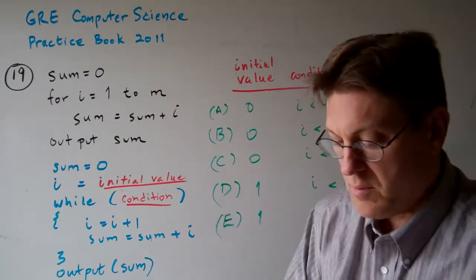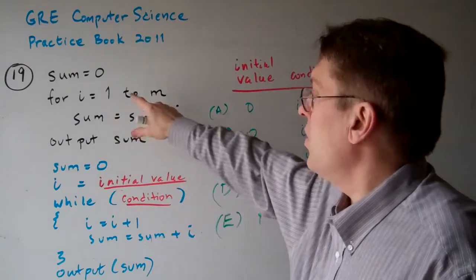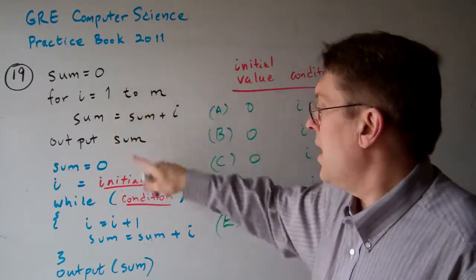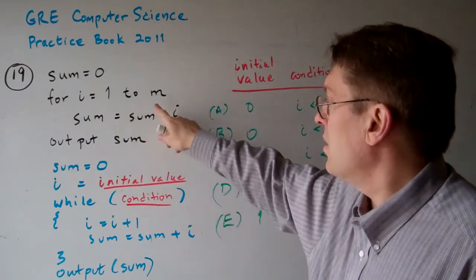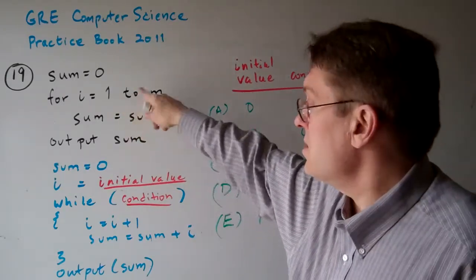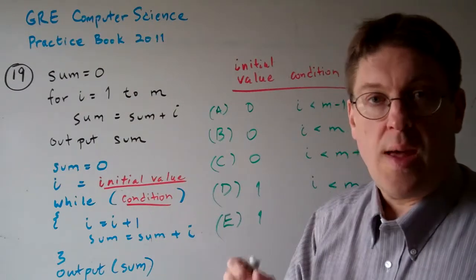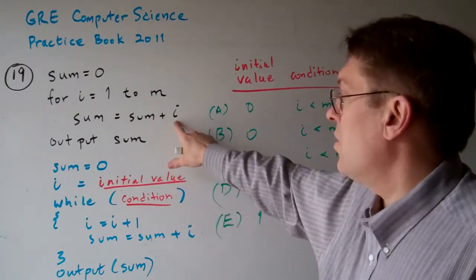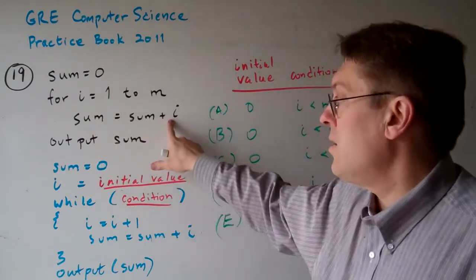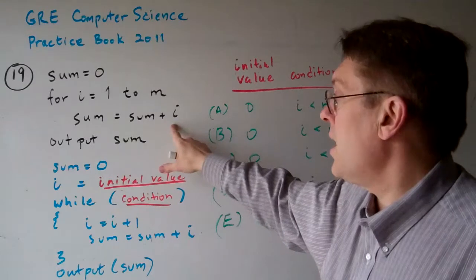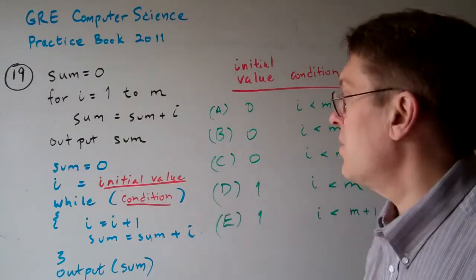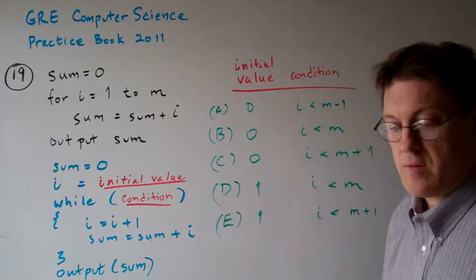Here we have the initial condition is i equals 1 and the test condition goes from 1 to m. This loop executes m times and starts with the sum at 0, and it increases by i until it gets to m. So it's 1 plus 2 plus 3 plus 4 and so on.